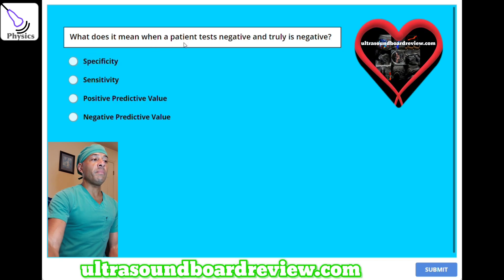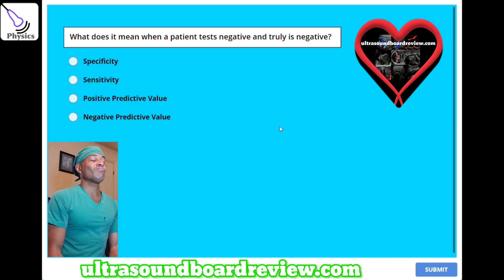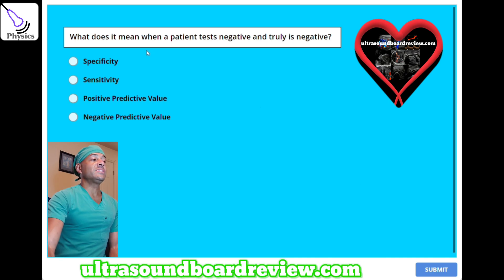What does it mean when a patient tests negative and truly is negative? A, specificity. B, sensitivity. C, positive predictive value. Or D, negative predictive value. The answer is D — negative predictive value.